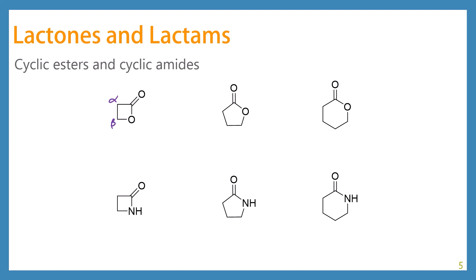And you can do this just going through the Greek alphabet. So you have alpha, beta, gamma, alpha, beta, gamma, and delta. So this would be called a beta lactone. This would be a gamma lactone. And then we would have our delta lactone.